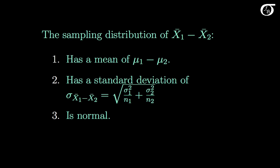If those conditions hold, then the sampling distribution of x1 bar minus x2 bar can be shown to have these three properties. On average, the difference in the sample means is equal to the difference in the population means. Or in other words, the difference in the sample means is an unbiased estimator of the difference in the population means.